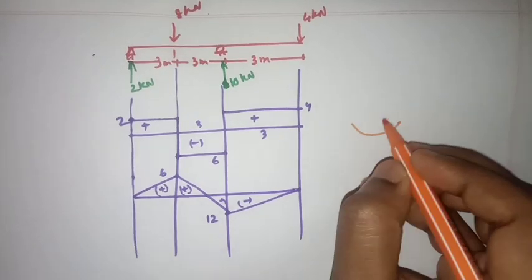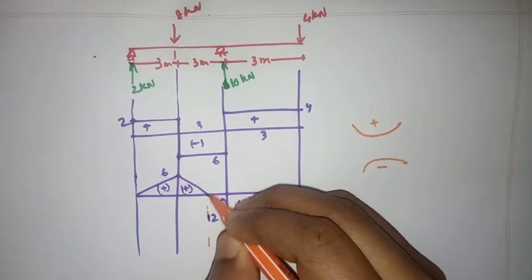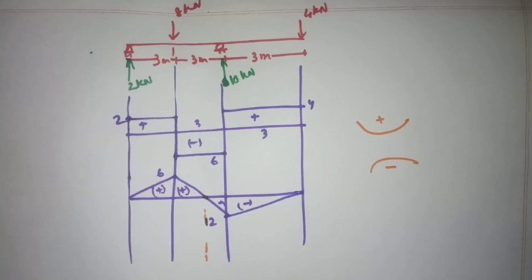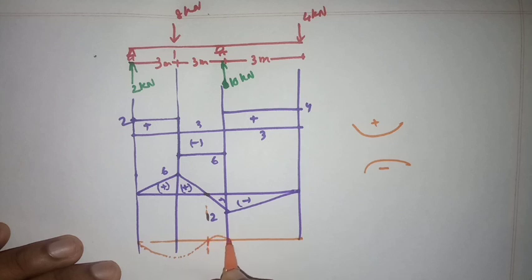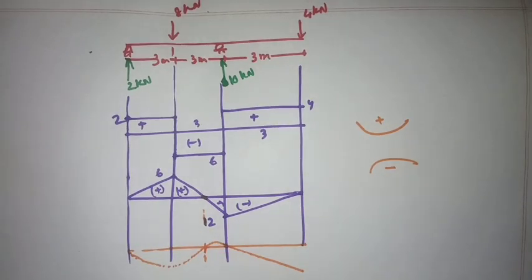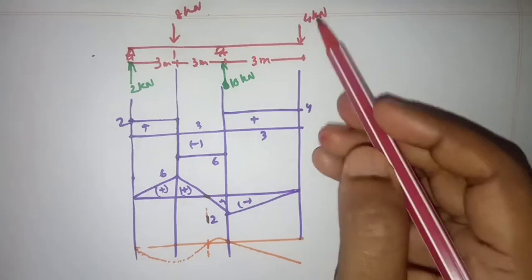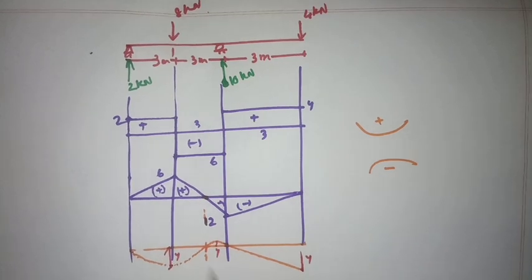For the positive moment region the elastic curve is concave up, and for the negative moment region it is concave down. There is a point of inflection between them. At the roller support there is slope but no deflection, at the pin support there is no deflection, and at the free end where 4 kN acts there is deflection. The elastic curve can be drawn easily using this method.